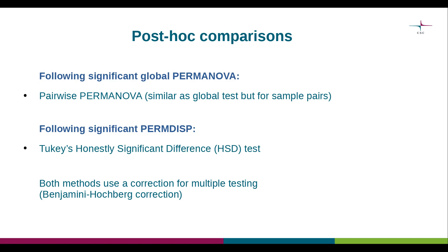If there is a significant PERMDISP result, this can be followed by a Tukey's Honestly Significant Difference (HSD) test. Since both approaches involve multiple testing, the test results are corrected for that, which means that sometimes the results can be somewhat conservative.